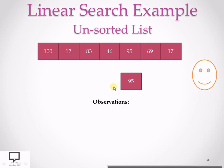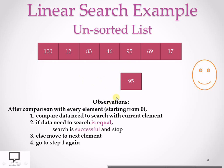Observations to keep in mind: compare the key element with the current element starting from position 0. If the data to search is equal to the current element, the search is successful and we stop. Otherwise, if not equal, move to the next element and go back to step 1 for comparison. Continue this until the search is successful or we reach the end of the list.